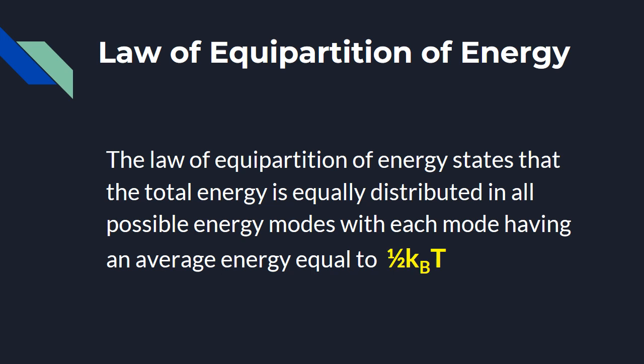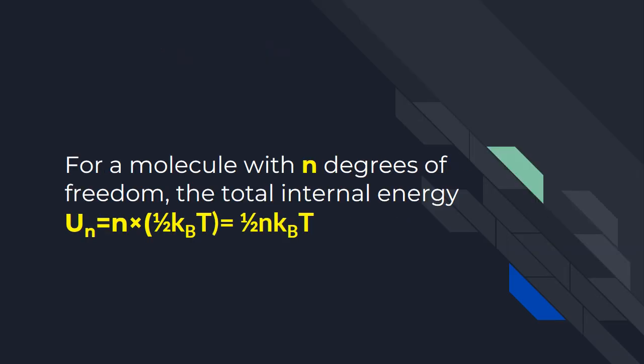With each mode having an average energy equal to ½kBT. That means for each degree of freedom of a molecule, the average energy is equal to ½kBT, where kB is the Boltzmann constant and T is the temperature.